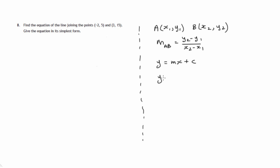Or it has this other form. Now if you don't know this formula, that doesn't matter — we can get on without it. In this form, a, b is a point that lies on the line and m again is the gradient of the line. There's a lot of formulae there but we'll work our way through this.